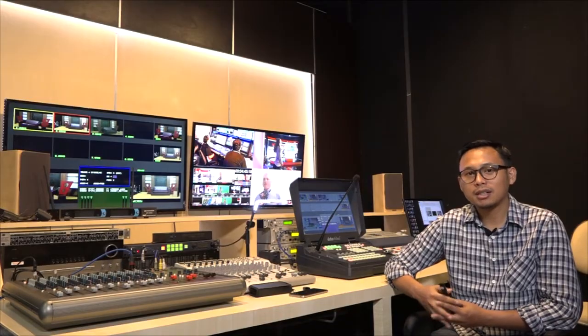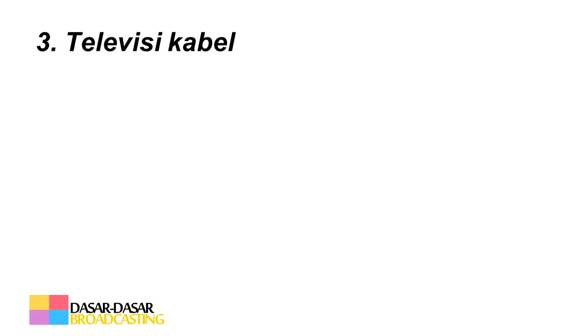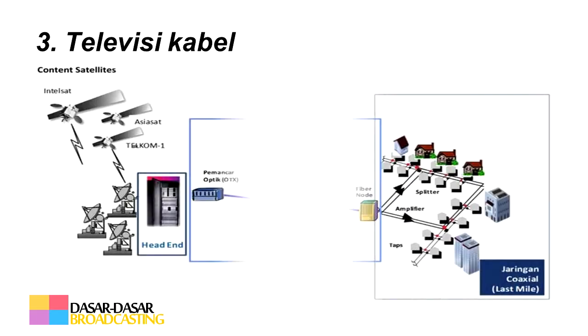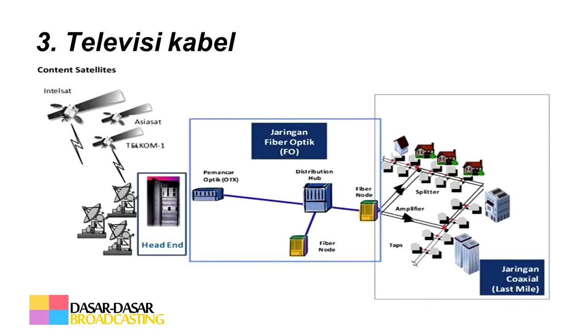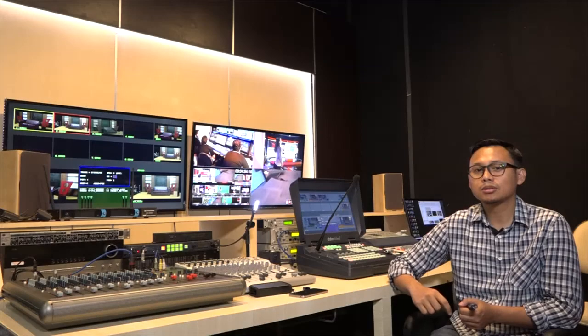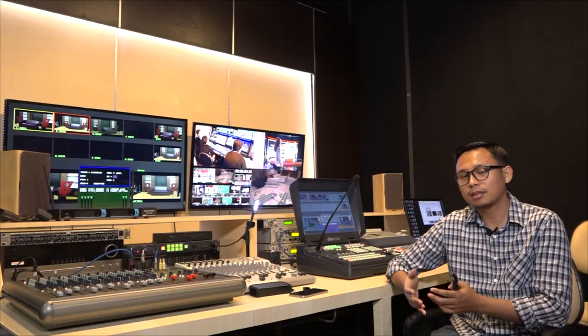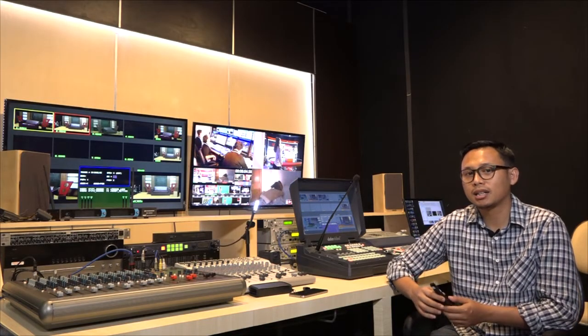Yang ketiga adalah televisi kabel. Berdasarkan medium penyebarannya, televisi kabel menggunakan kabel atau fiber optic untuk menyalurkan siaran dari stasiun televisi ke rumah-rumah. Jenisnya adalah digital, tapi medium penghantarannya menggunakan kabel.